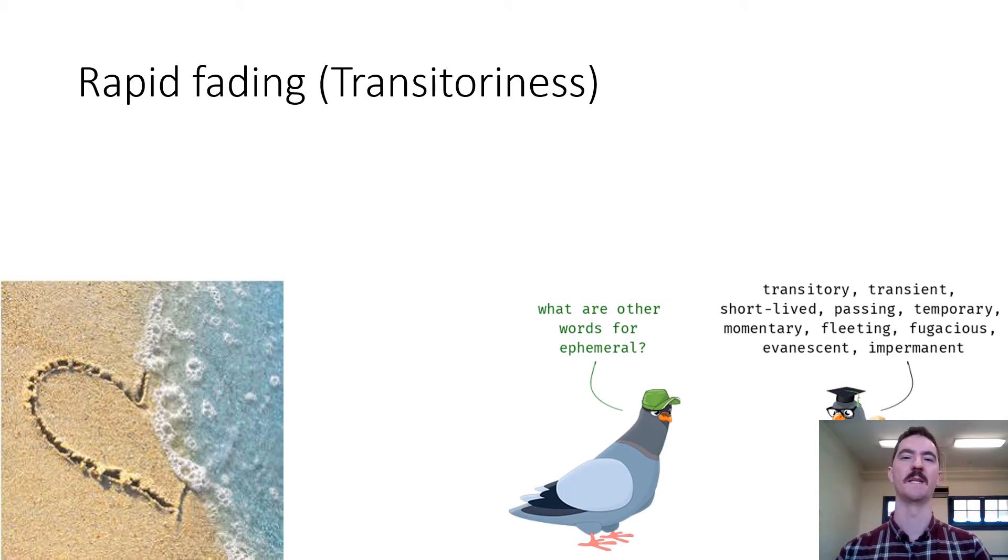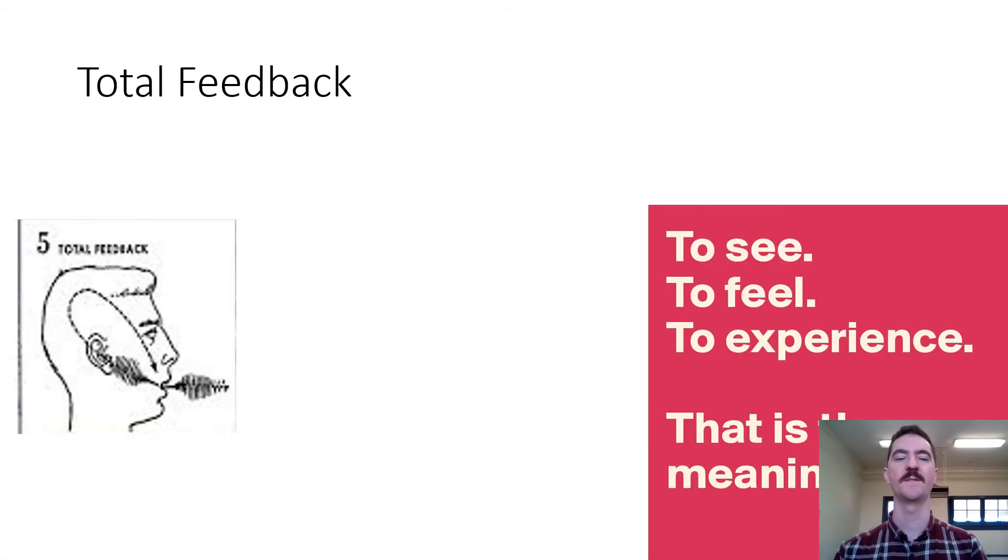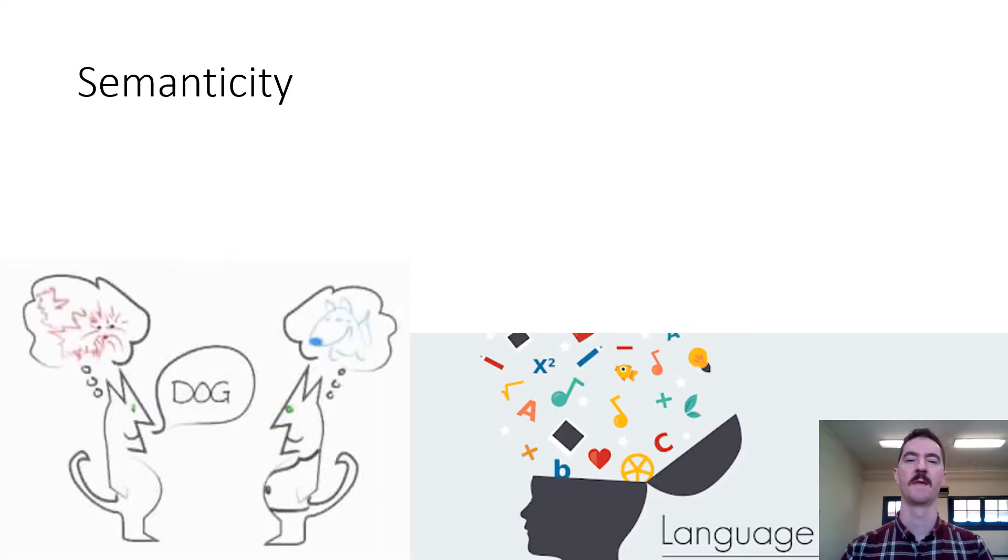Rapid fading or transitoriness: transitory means it's gone, ephemeral means it's gone very quickly, like a sandcastle on the beach but perhaps even quicker. As soon as I've said something and it's left my mouth, that's it unless someone made a recording or video of it. Total feedback means as I speak, if I make a mistake, I can hear it being fed back through my own ears and then I can make corrections as I need to.